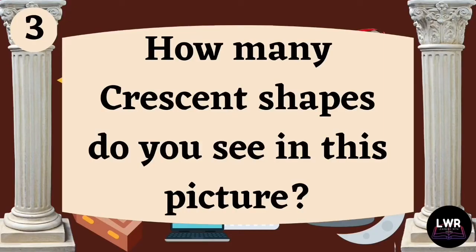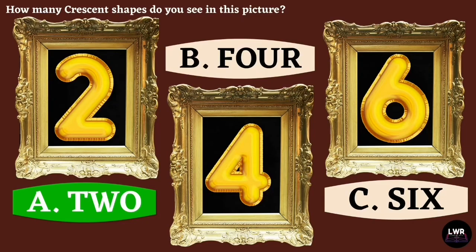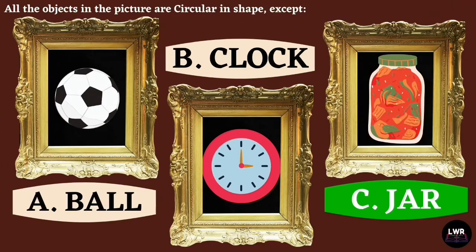Question number three: how many crescent shapes do you see in this picture? The correct answer is letter A, two. Question number four: all the objects in the picture are circular in shape except — the correct answer is letter C, jar.